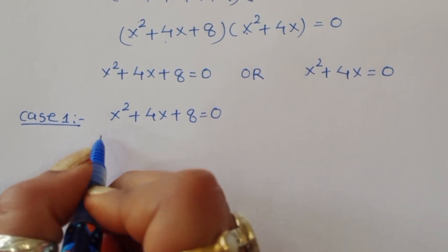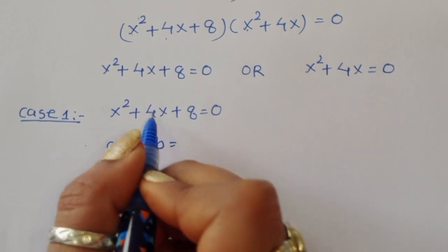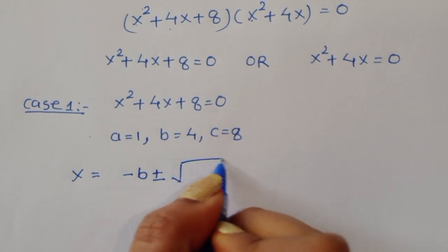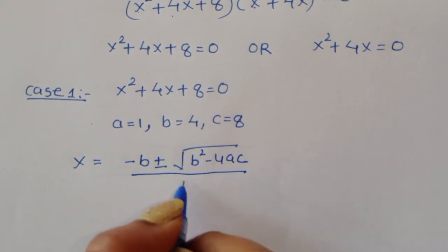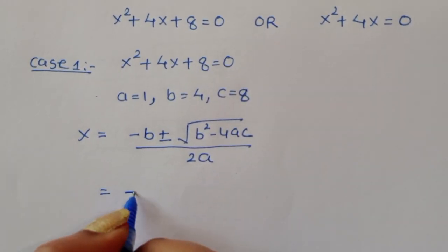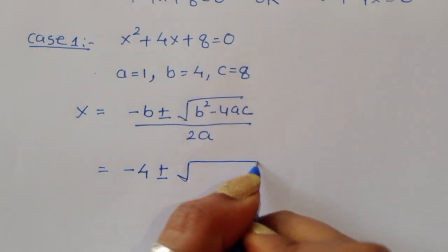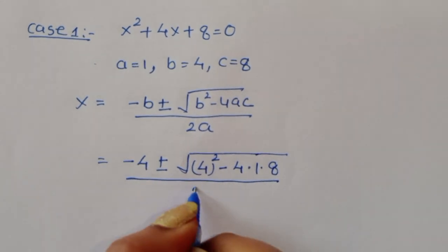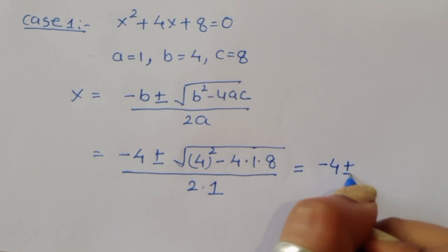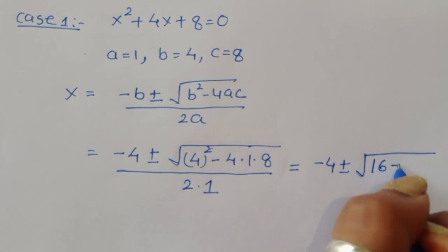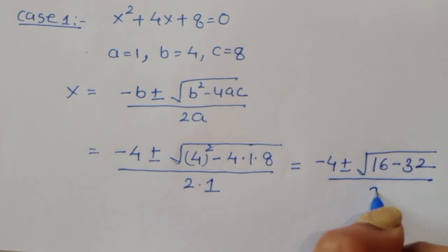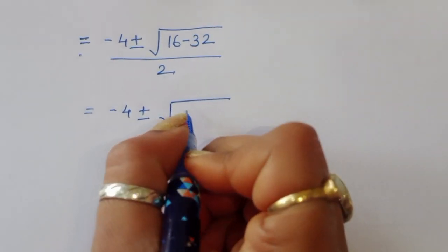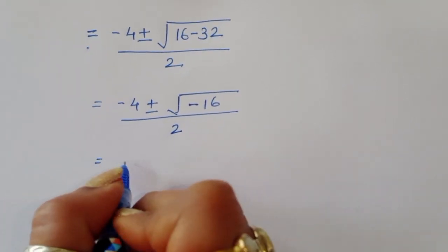For Case 1, x² + 4x + 8 = 0. Using the quadratic formula x = [−b ± √(b² − 4ac)] / 2a, the coefficients are: a = 1, b = 4, c = 8. So x = [−4 ± √(16 − 32)] / 2.